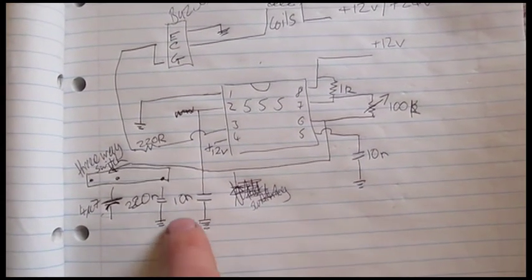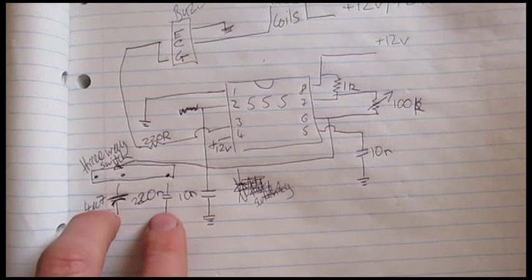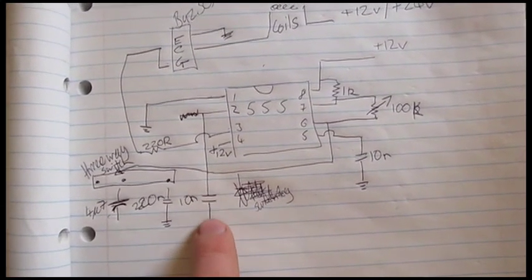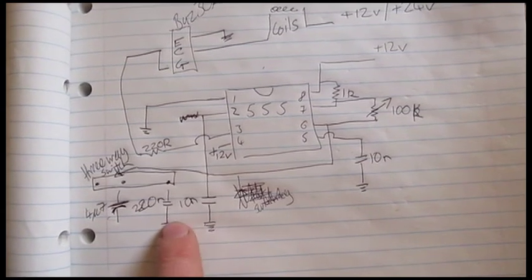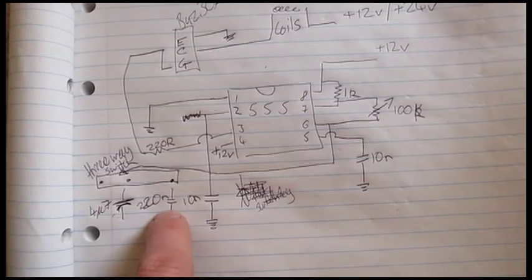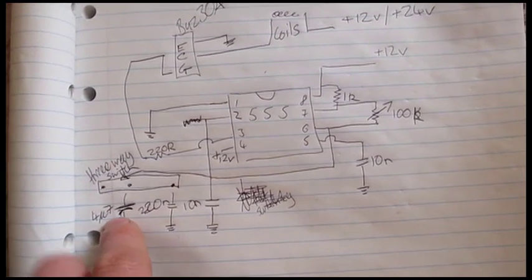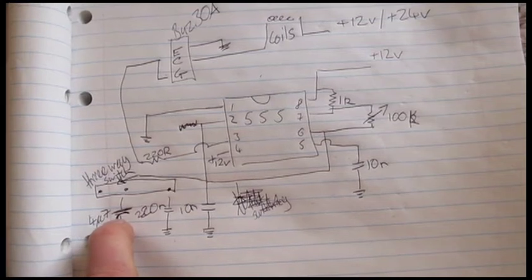And for greater range, I've got this three-way switch which just adds to this 10k timing capacitor, either 220 nanofarad or a 4 microfarad capacitor, which just increases the timing.